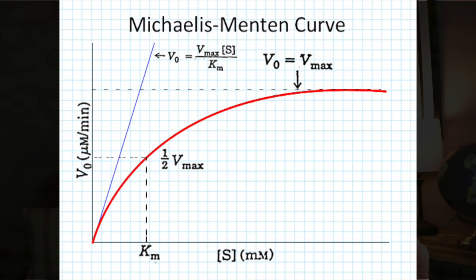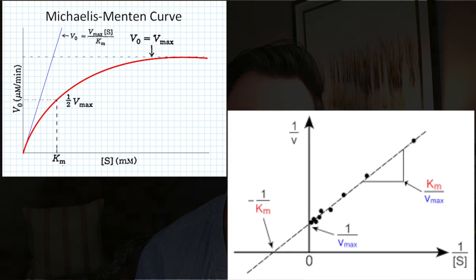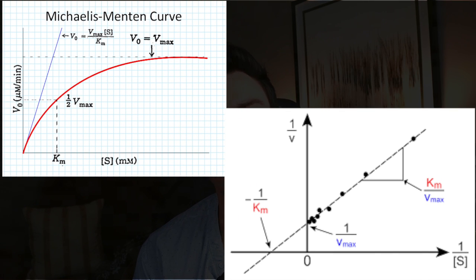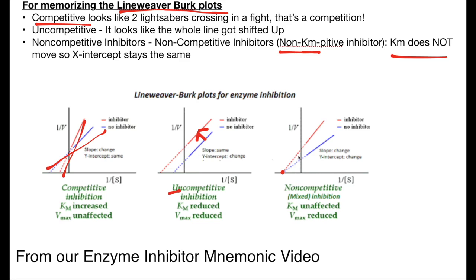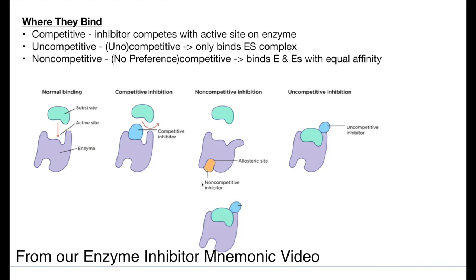Km is usually represented in two types of graphs: the Michaelis-Menten graph, which is a hyperbolic curve, and the Lineweaver-Burk plot, which does some fancy inversion with the numbers to make a linear curve. Both depict the same data and are important for the MCAT, but for this video we're focused on the math. The MCAT usually tests the Michaelis-Menten graph when testing math. You do need to have the Lineweaver-Burk plot of reversible enzymatic inhibitors memorized — there's a separate video with good mnemonics for that.